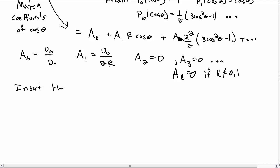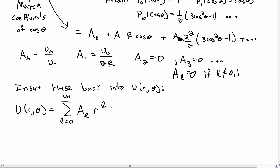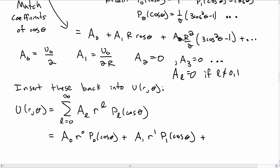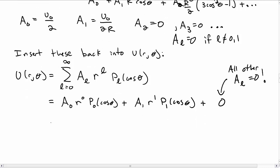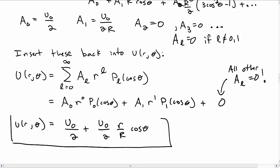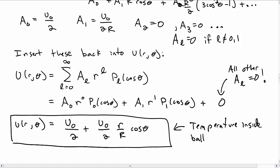So we take the a_l's we just calculated — namely a₀ and a₁ — and insert them back into our expression for the temperature as a function of r and θ. Recalling that we had the infinite sum over l from 0 to infinity of a_l times r^l times P_l(cos θ), but now inserting the values we only get two terms: a₀ r⁰ P₀(cos θ) plus a₁ r¹ P₁(cos θ). All the other terms are zero since all other a_l's are zero. Plugging in a₀ = u₀/2 and a₁ = u₀/(2R), we get u = u₀/2 plus u₀/(2R) times r cos θ. This is our final solution — the temperature inside the ball as a function of r and θ.